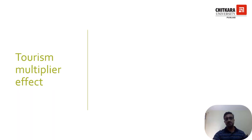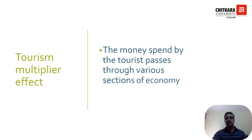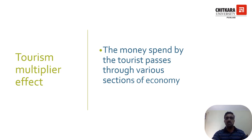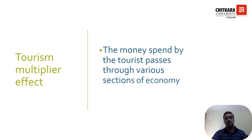Tourism multiplier effect — the money spent by the tourist passes through the various sections of the economy. That means when a tourist spends some money to purchase a service or product, it passes on to the grassroot level. For example, if you purchase a bread, one portion of that money will definitely go to the farmer who is growing that wheat.